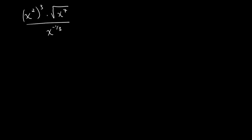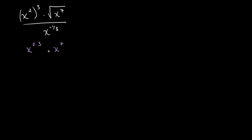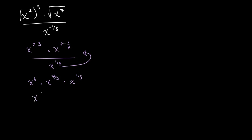Once again, we want to look for the rules that stick out to us first. Over here we have the power rule — we can simply write this as x to the power of 2 times 3. Then, since the square root is the same as writing to the power of 1 over 2, we get x to the power of 7 times 1 over 2. The whole thing is divided by x to the power of negative 1 over 3. Using the negative power rule, we bring this up, giving us x to the power of 6, times x to the power of 7 over 2, times x to the power of 1 over 3. Now all we need to do is add all these exponents together: x to the power of 6 plus 7 over 2 plus 1 over 3.